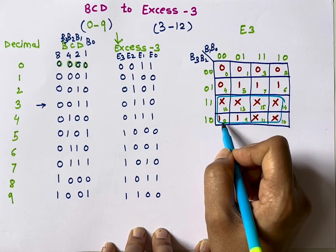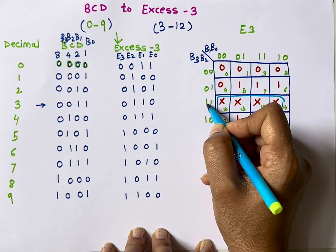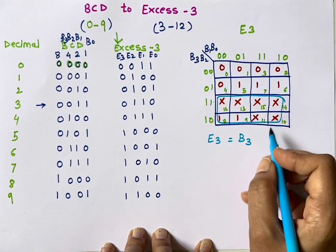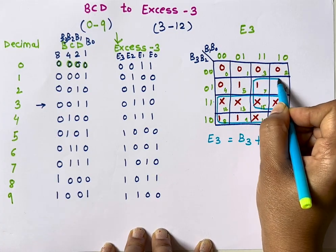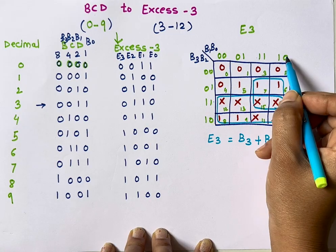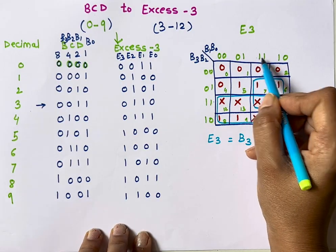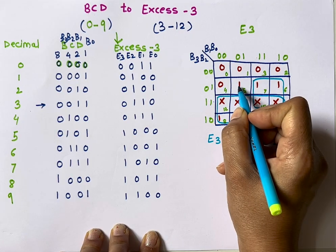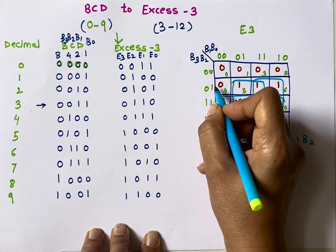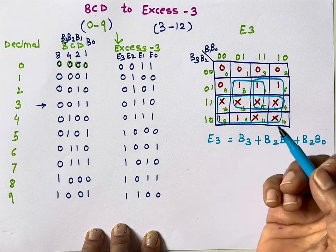Now we group the ones in the K-map for E3. In one group of two rows, B3 is 1 and B2 varies, so we take B3. In another group of four, B2 is 1 and B1 is common, giving B2·B1. There is also a group contributing B2·B0. So the equation for E3 is: E3 = B3 + B2·B1 + B2·B0.